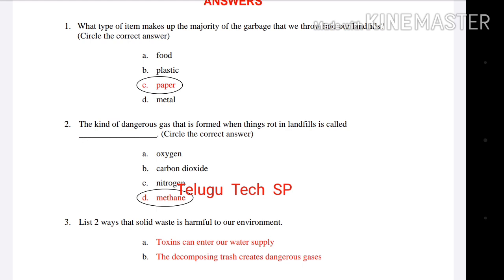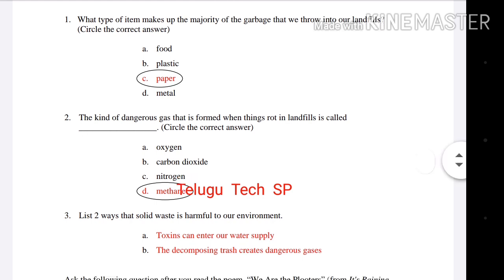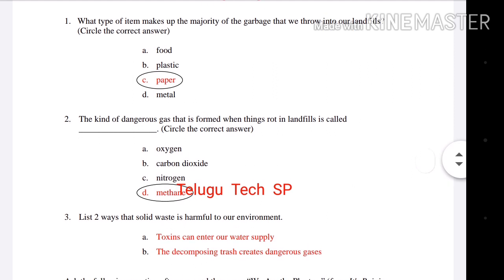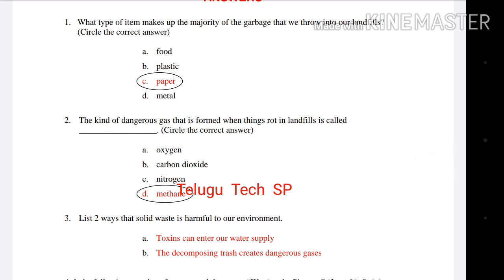Third question: List two ways that solid waste is harmful to our environment. The first answer: toxins can enter our water supply — toxins can enter and pollute the water system and cause health problems. The second answer B: Decomposing trash creates dangerous or harmful gases that are released. Both are correct answers for the third question.